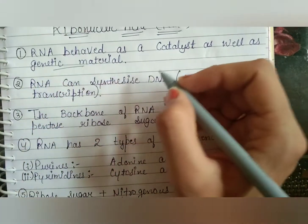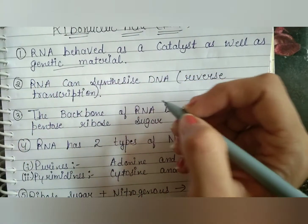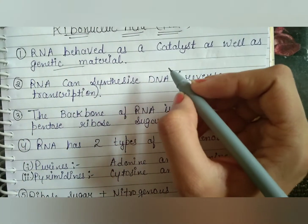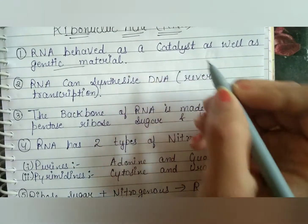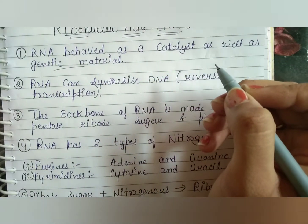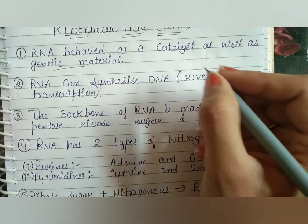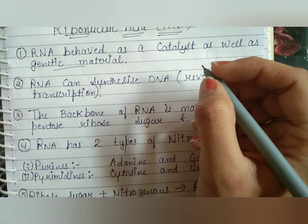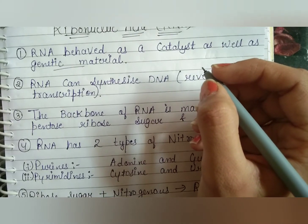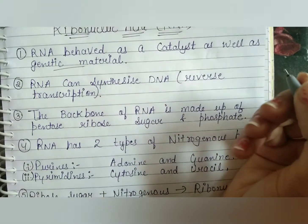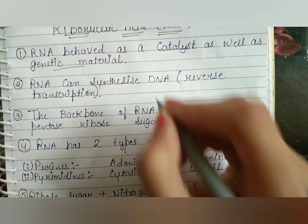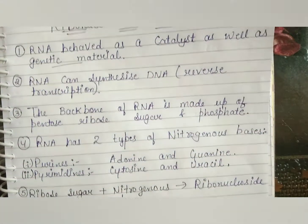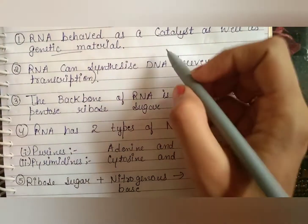A catalyst is that element which enhances or increases the speed of a reaction without getting involved in that reaction. So RNA behaves as a catalyst as well as a genetic material.